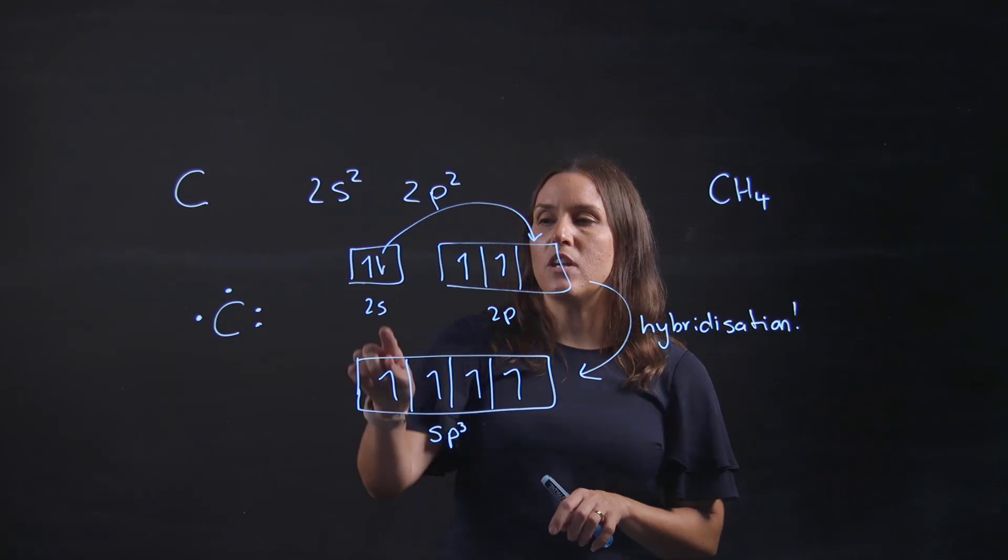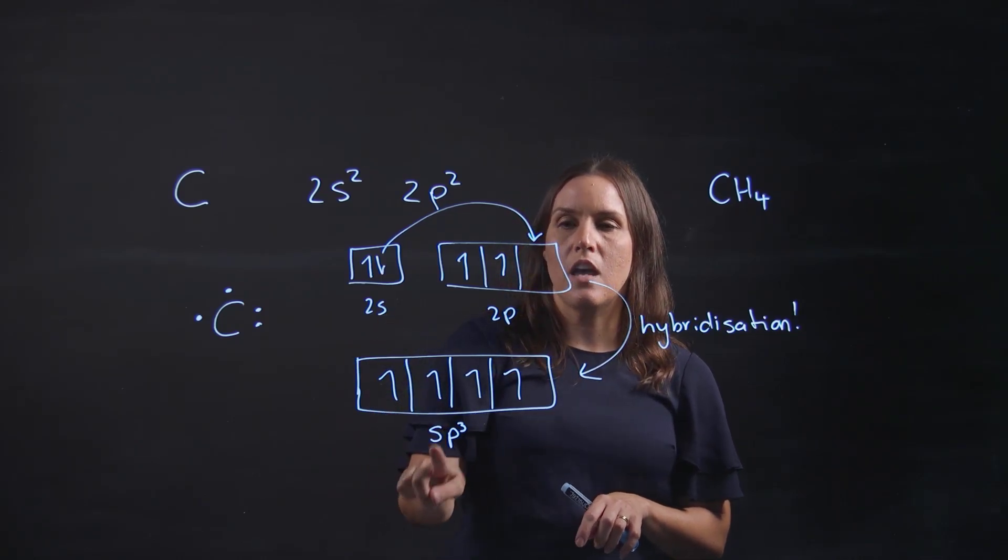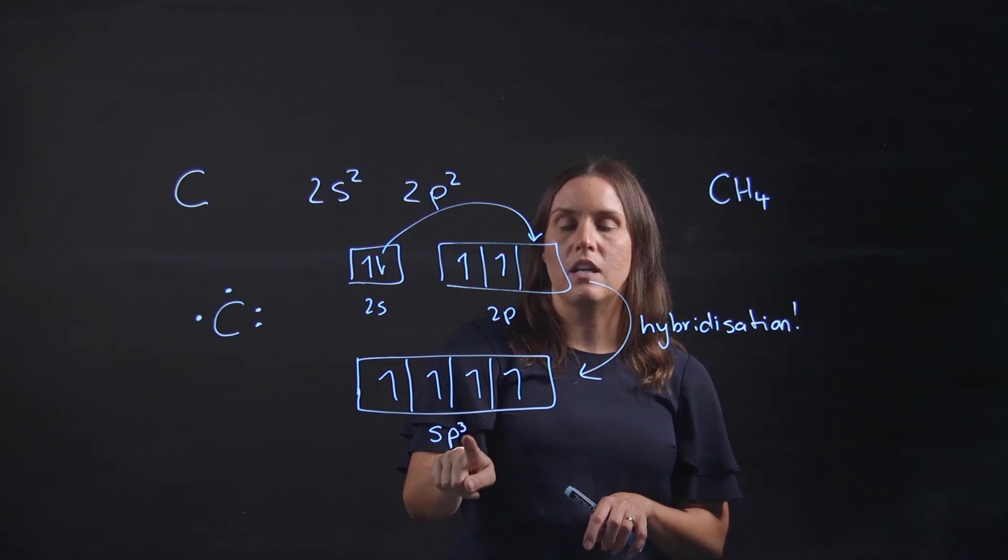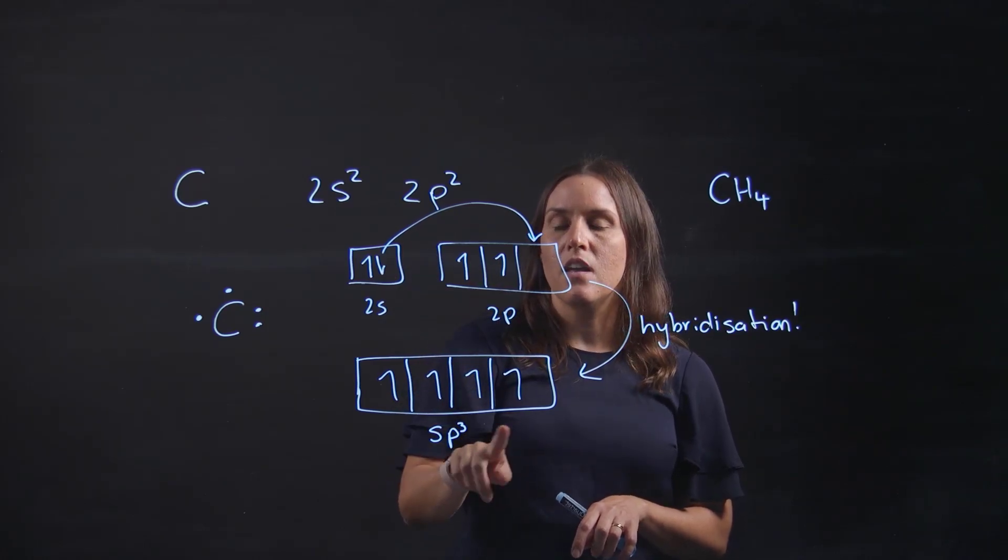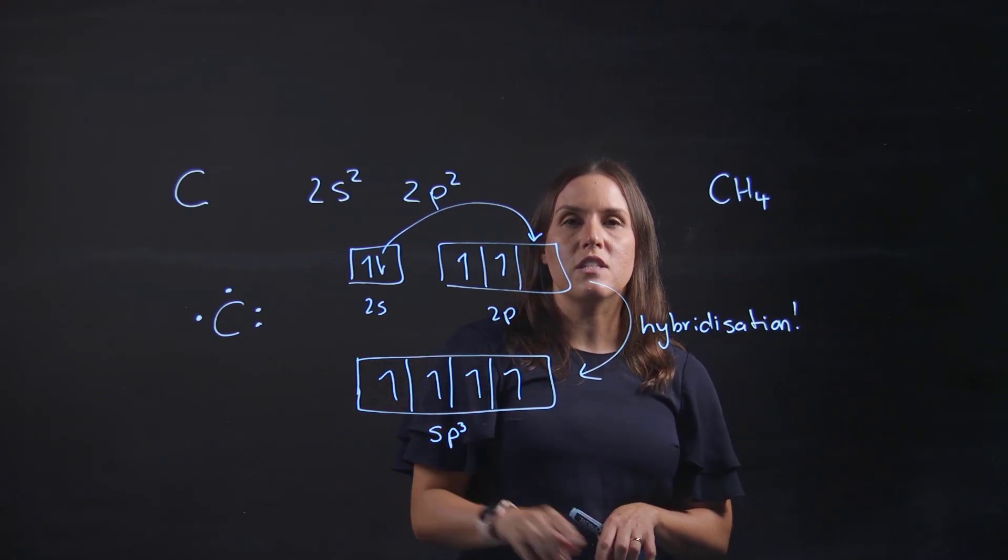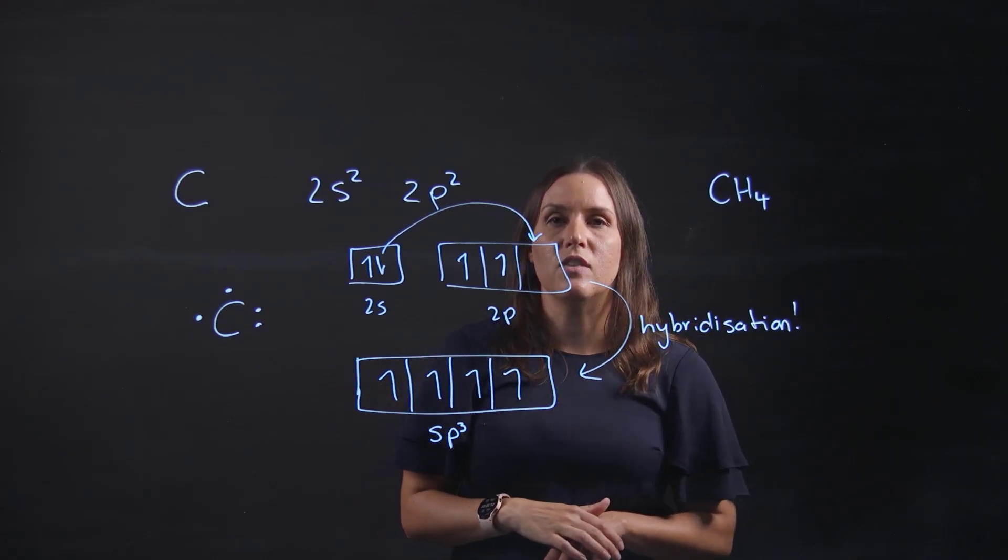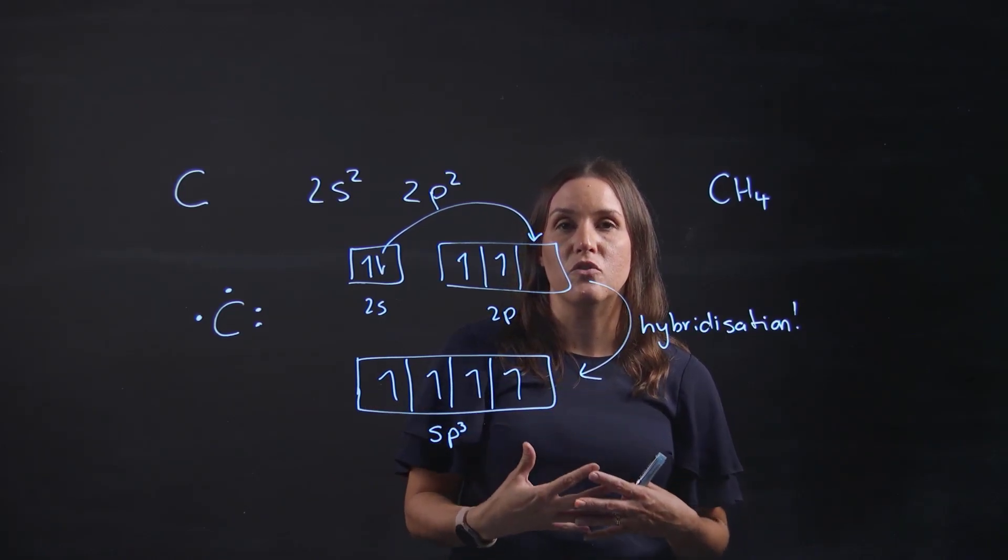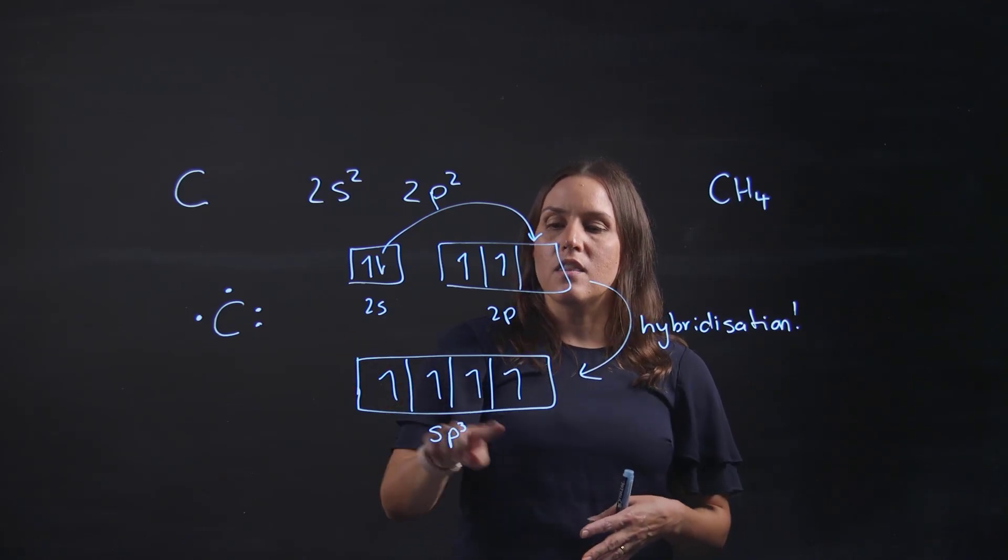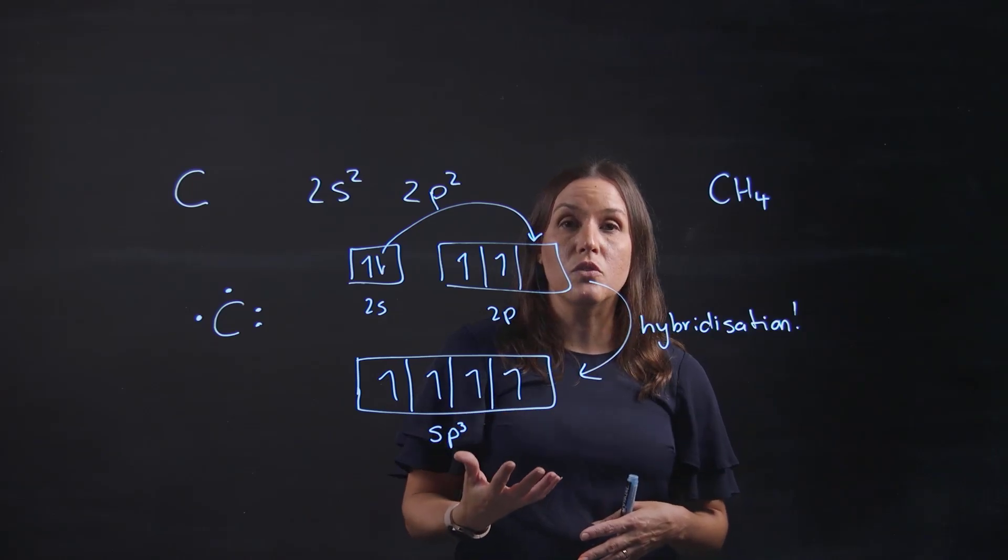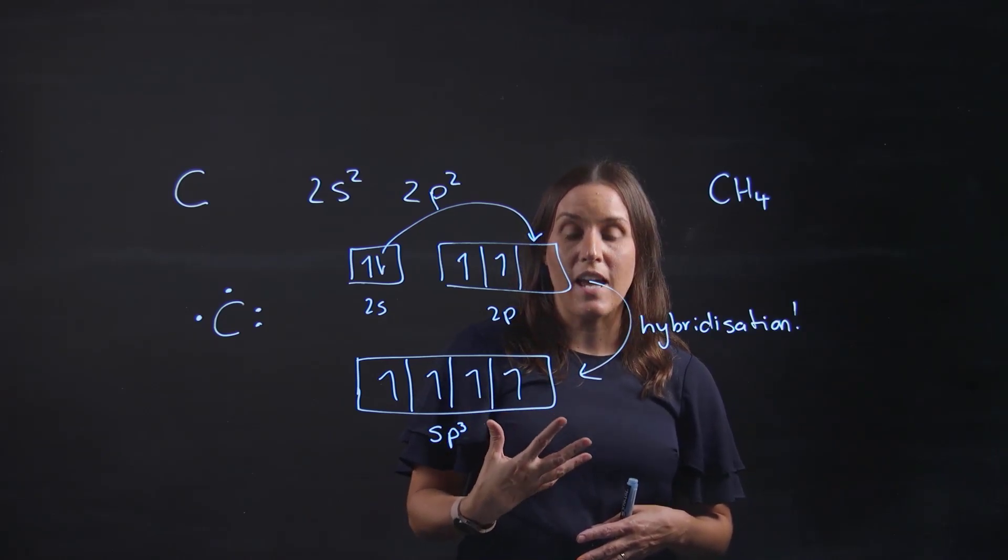You know it's sp³ because we've used one s and one, two, three p's. Remember we had to promote that one up to get it into the third p. So now they're all equal. Each of those electrons can make equal bonds to each of the electrons in the hydrogen atoms. So those covalent bonds will all have equal strengths. There's a few rules to follow and I'll go through them with you now.